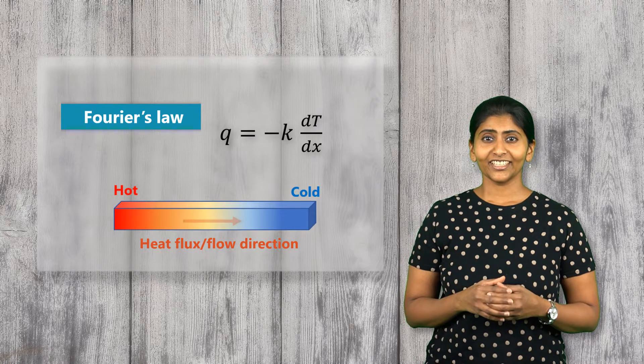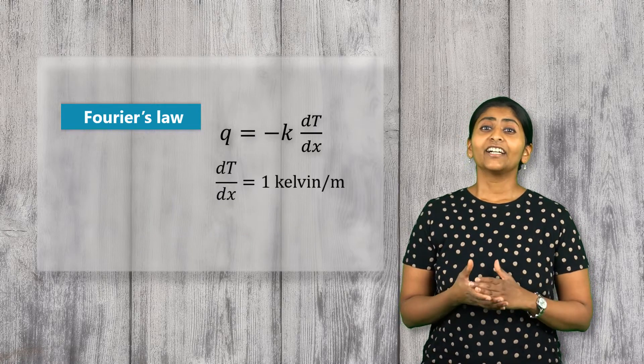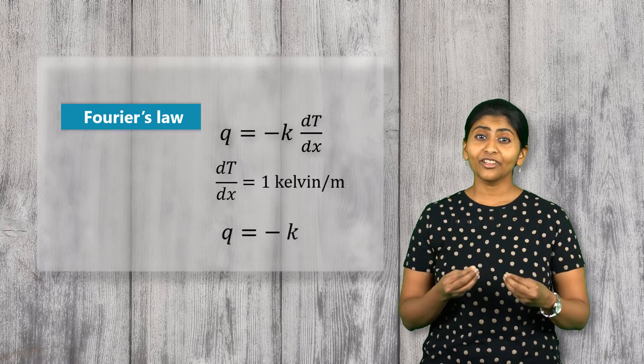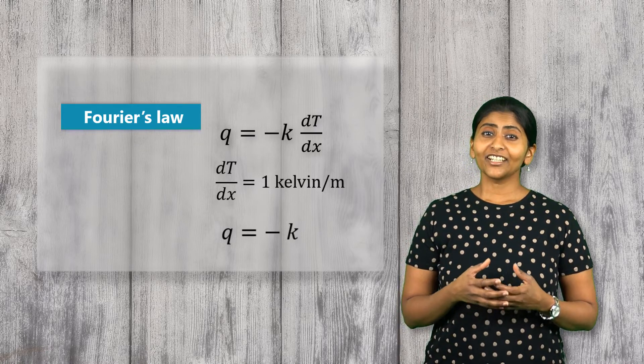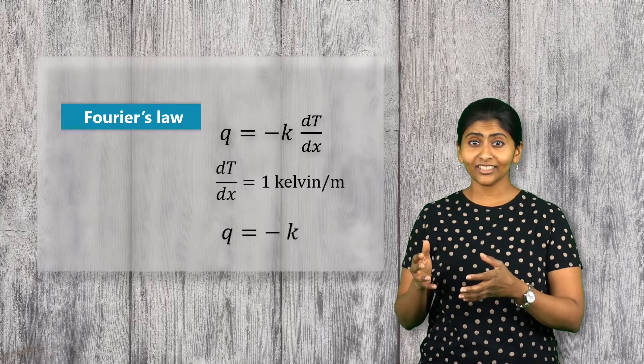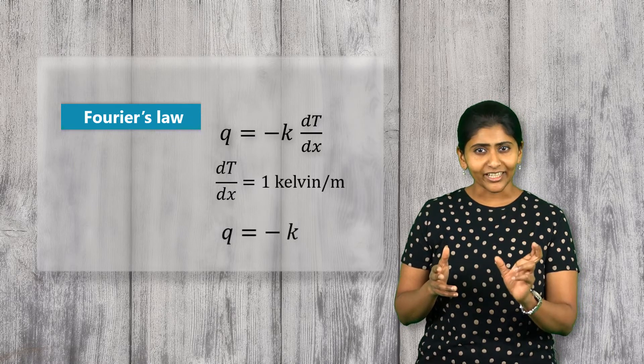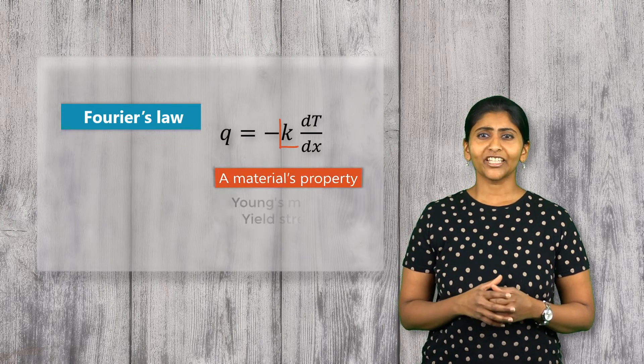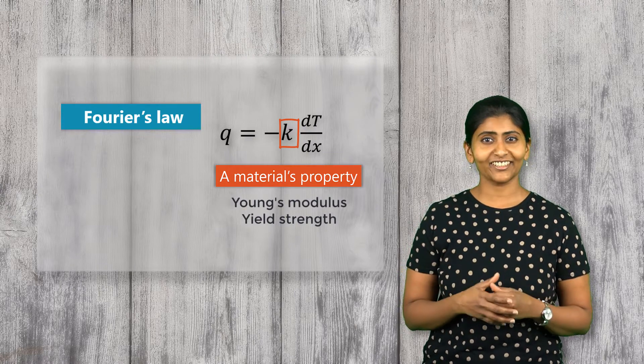In this equation, if we have a unit temperature gradient across the material, then the thermal conductivity is numerically equal to the heat flux through the material. Thus, thermal conductivity of a material can be defined as the heat flux transmitted through that material due to a unit temperature gradient under steady state conditions. It is a material property just like Young's modulus or the yield strength of a material.